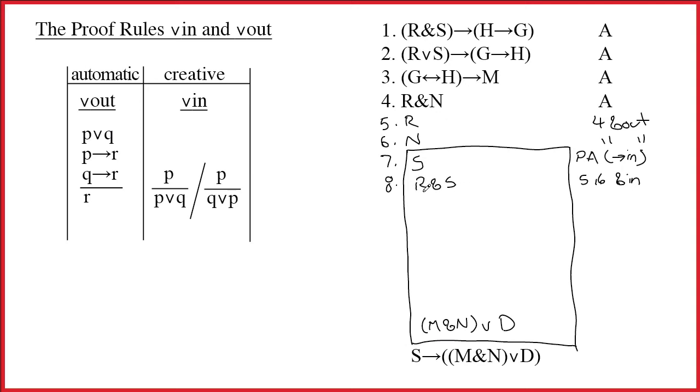Where did this R and S come from? It did not come out of line 1. Line 1 was merely the inspiration to build it. Of course, this was a creative rule and you shouldn't do creative rules unless you know why you're doing it, but I do know why. Because I wanted to do the arrow out. And so now I get H arrow G by 1, 8 arrow out.